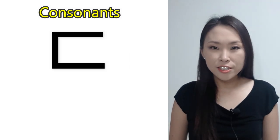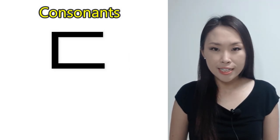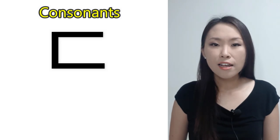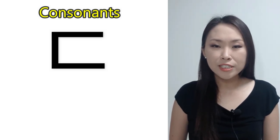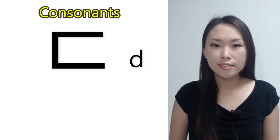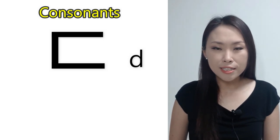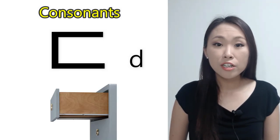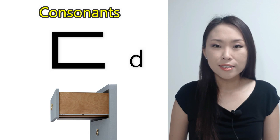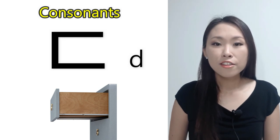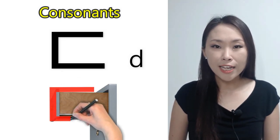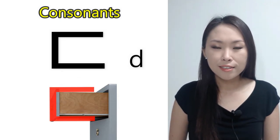The name of this consonant is ㄷ. The romanized letter for ㄷ is 'd'. ㄷ sounds like the letter 'd' in the word 'door'. The shape of the drawer looks like ㄷ.